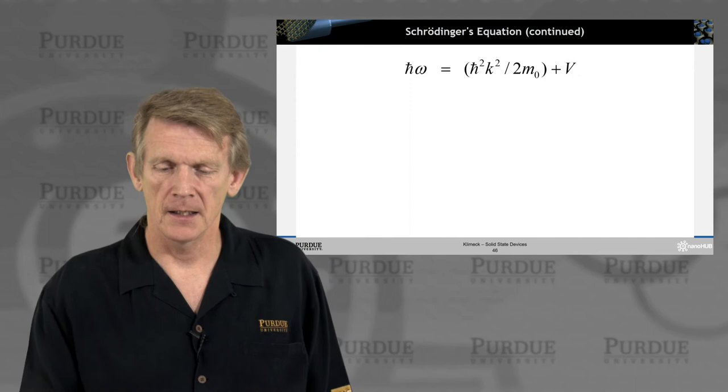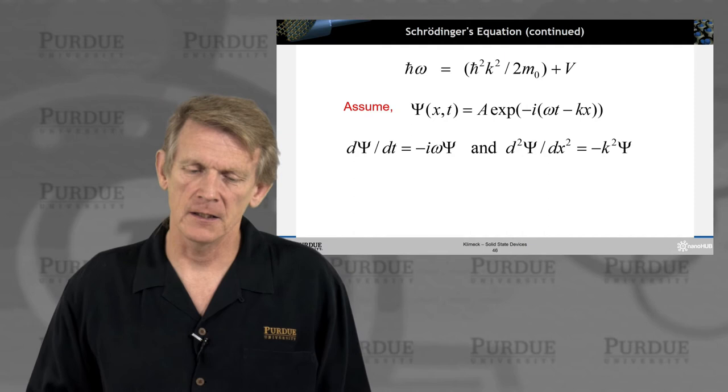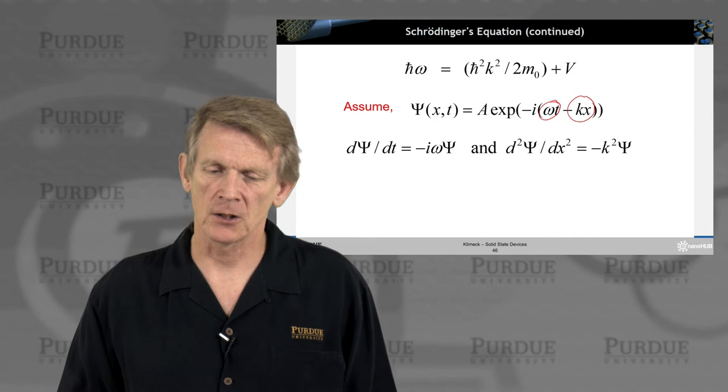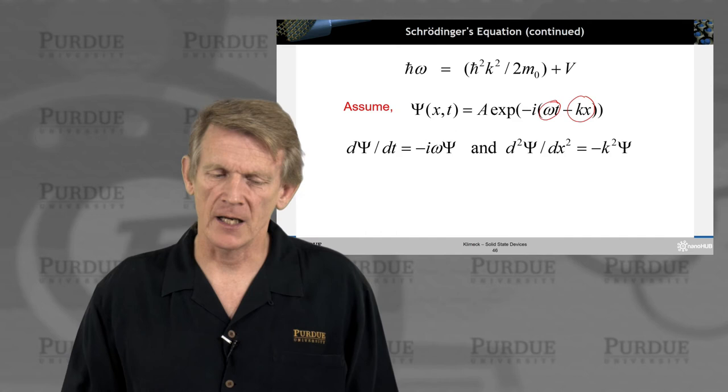Now if you take that one and assume by ansatz that the wave is a plane wave, it has a time dependence and a momentum dependence and it obeys a wave expression, you can plug or calculate out of that assumption a time dependence and a momentum dependence or second spatial dependence.